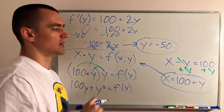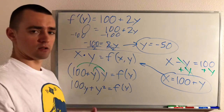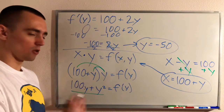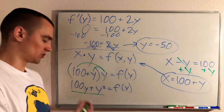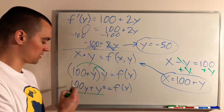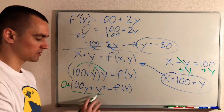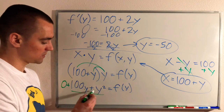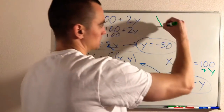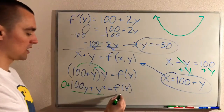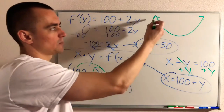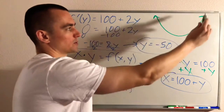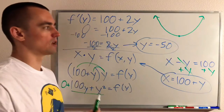So y = -50 is where this function has a critical number, which could be a minimum or maximum. But let's think about the shape of this function: it's a quadratic — a y² term, a y term, and a constant of zero. This gives us a parabola. Since the y² term is positive, the parabola faces upward. We expect only one critical number, and since it opens upward toward infinity in both directions, that critical number must be a minimum.